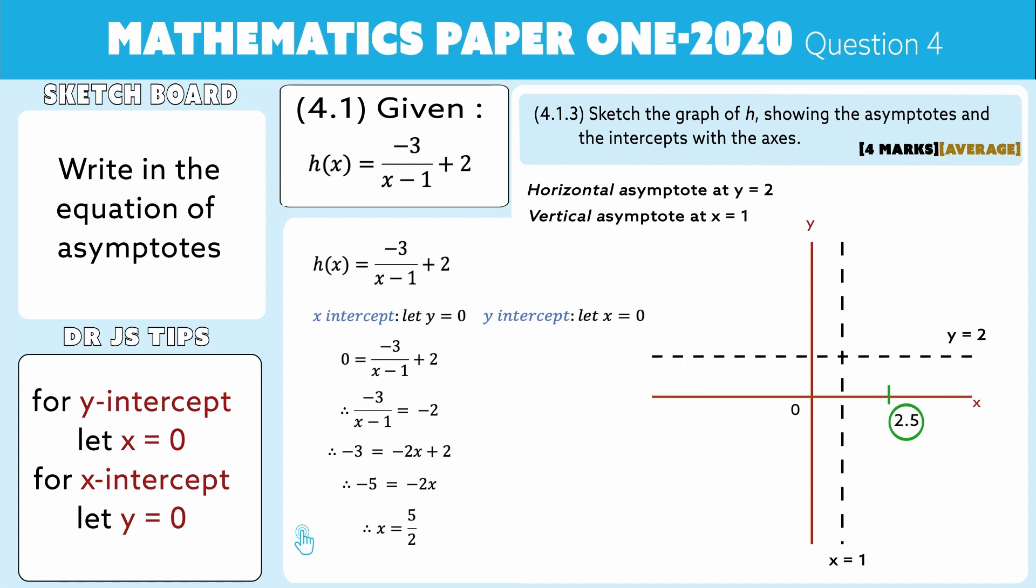Okay, so if x is 0, then y will be -3/(-1) + 2. Now that gives you positive 3 plus 2, which lies at 5.